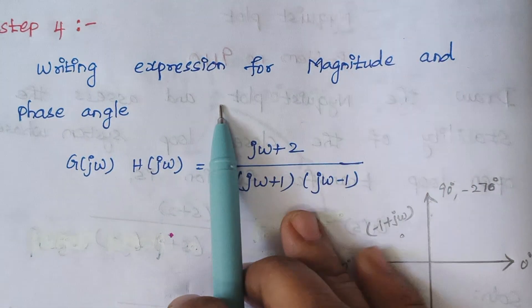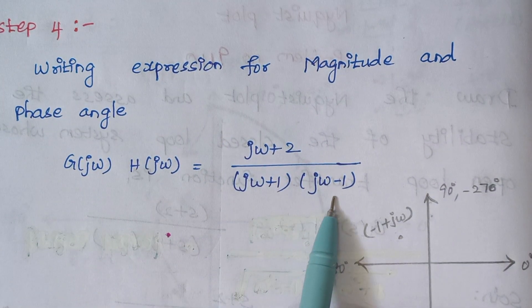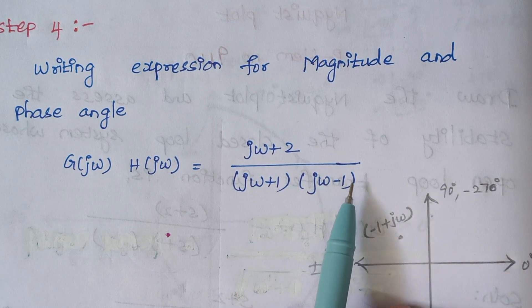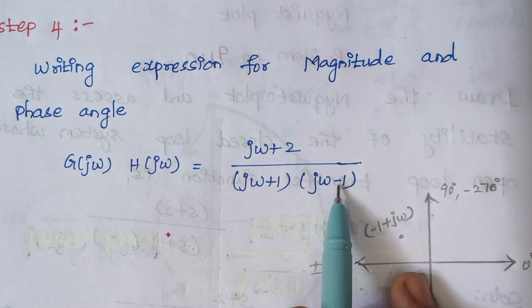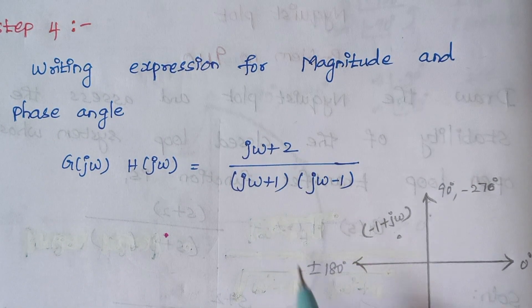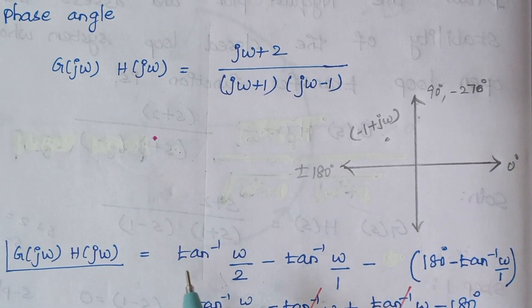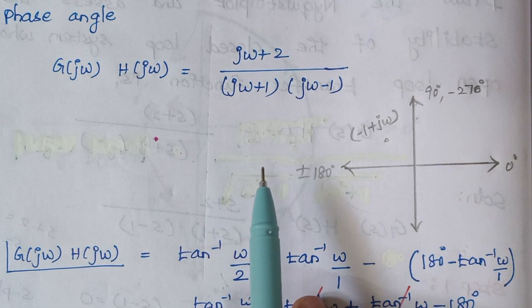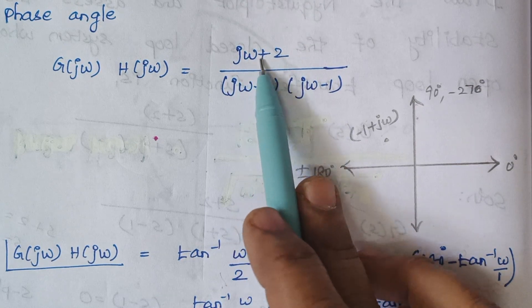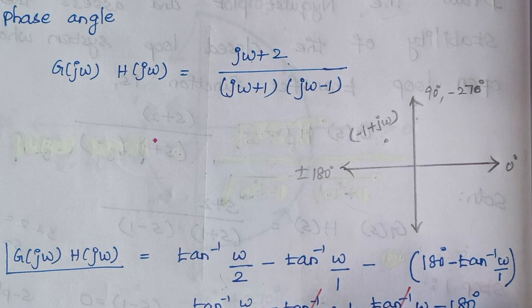Step 4 is writing the expressions for magnitude and phase angle. In this problem we have replaced s by jω. No need to write the magnitude expression — we can directly substitute the values. For the phase angle, it is written as tan inverse of imaginary coefficient divided by real term. Here the imaginary coefficient is ω and the real term is 2, so we write tan inverse of ω by 2.